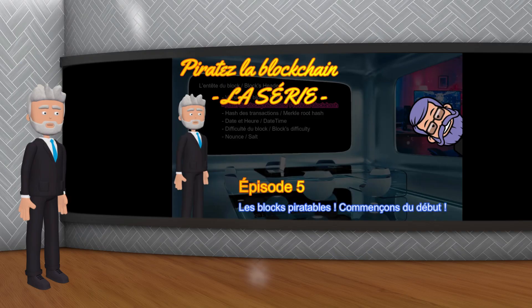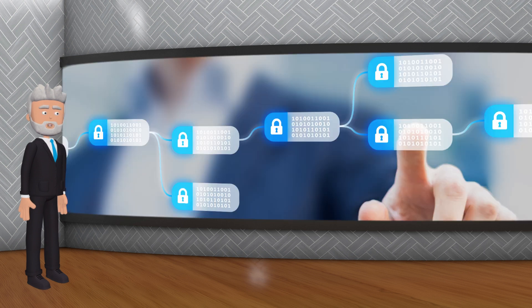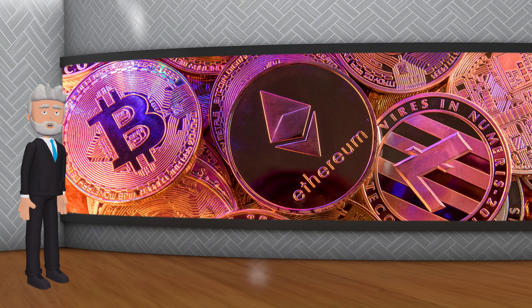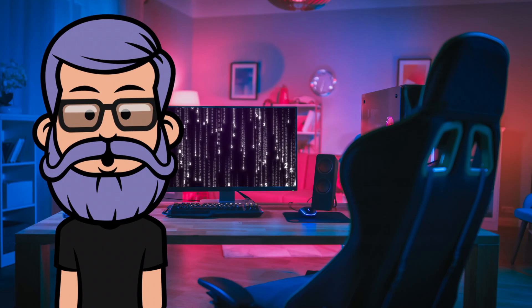Dans la précédente vidéo, nous avons abordé le concept de blockchain et comment les blocs sont liés entre eux à l'aide de fonctions de hachage. Aujourd'hui, nous allons nous concentrer sur ces fonctions de hachage, en particulier le SHA-256, l'ETH d'Ethereum et le script de Litecoin.